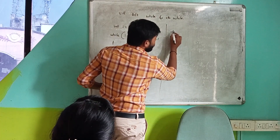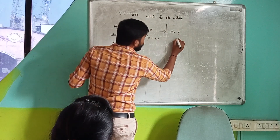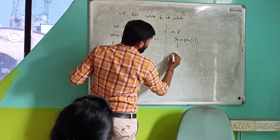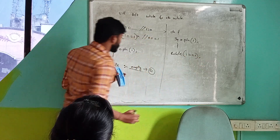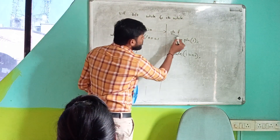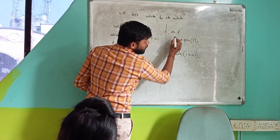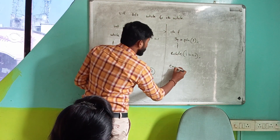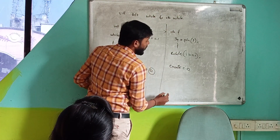Now coming to the do-while loop. Again, i is equal to zero — same variable. The code is: do { System.out.println(i); } while (i == 1); Same condition as before. With do-while, the do keyword means execute first. So System.out.println runs first, printing the i value of zero.